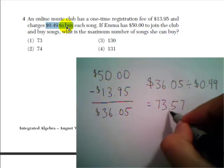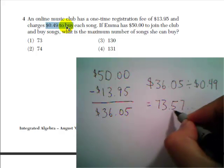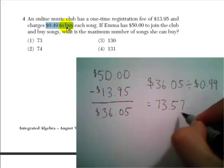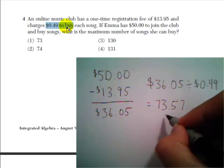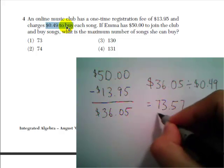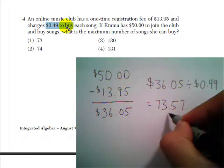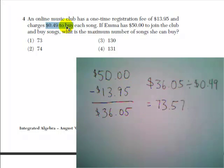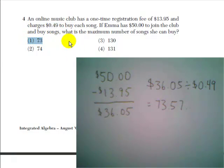Now, Emma can't buy 0.57 of a song, so the answer is going to be 73. Emma can buy 73 songs.